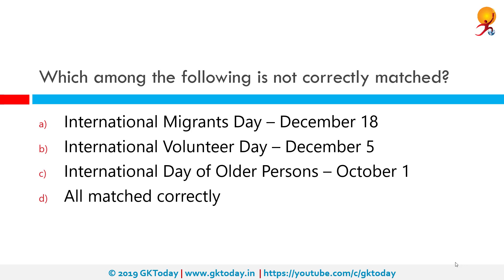Which among the following is not correctly matched? All of them are correctly matched. International Migrants Day is observed on 18th December in accordance with Resolution 55/93 of the United Nations General Assembly adopted on 4th December 2000. International Volunteer Day for Economic and Social Development is an international observance mandated by the UN General Assembly in 1985. The International Day of Older Persons is observed on October 1st each year — the UN General Assembly voted to establish this on December 14th 1990 as recorded in Resolution 45/106, and it was first observed in 1991.